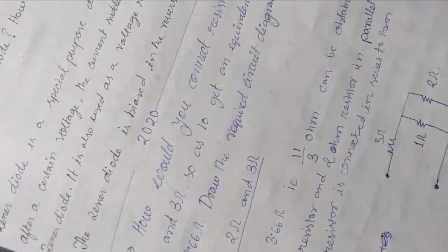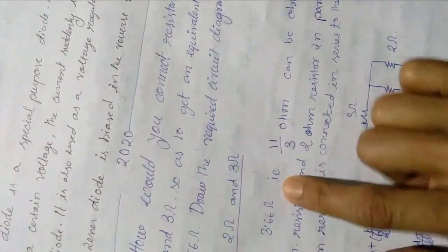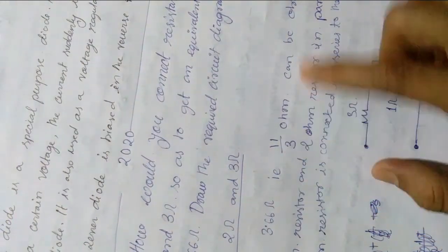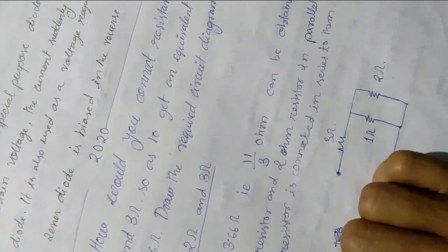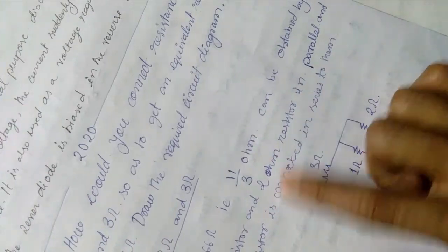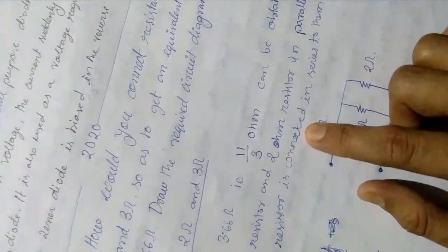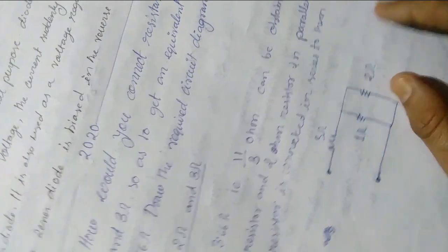So for getting 3.366 ohm that is 11 by 3 ohm can be obtained by placing 1 ohm, 2 ohm, 1 ohm and 2 ohm in parallel and the 3 ohm resistor is connected in series to them.